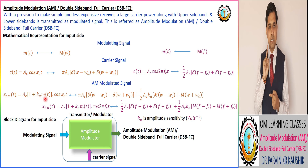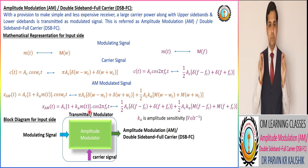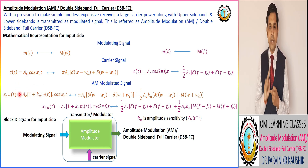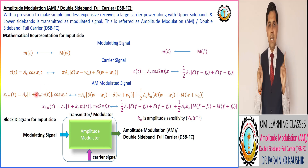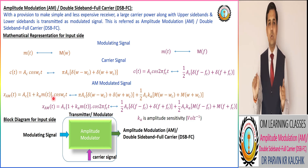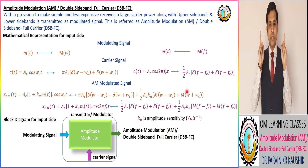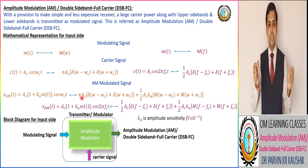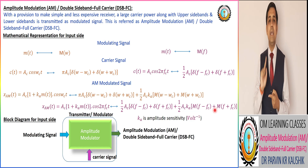The AM signal Ac [1 + ka·m(t)] cos(ωc·t) contains two components. The first signal corresponds to the full or large carrier, that is Ac cos(ωc·t). The second signal is Ac·ka·m(t)·cos(ωc·t), which corresponds to the sideband signal. The sideband signal plus the carrier signal together form the modulated signal, where ka is the amplitude sensitivity factor.